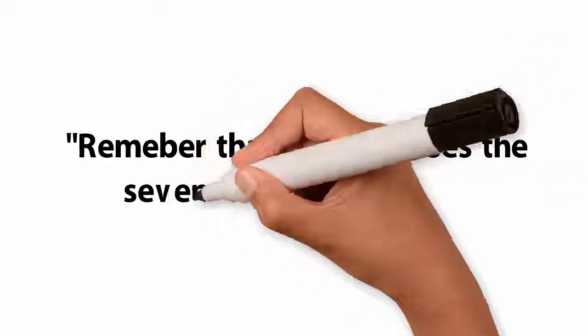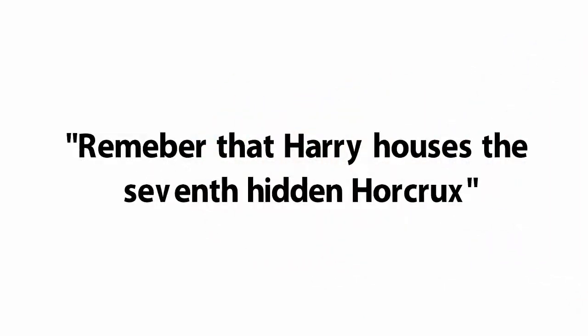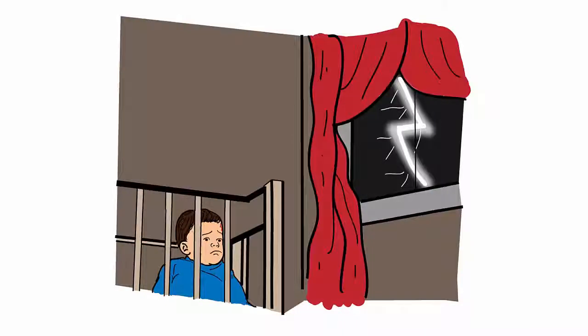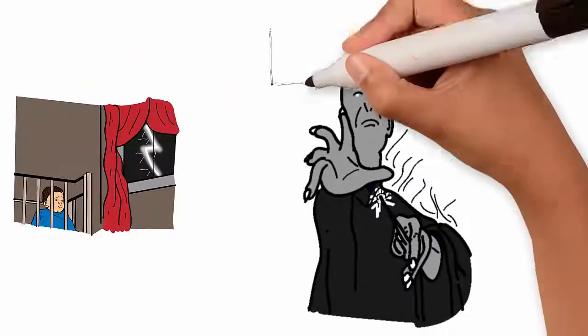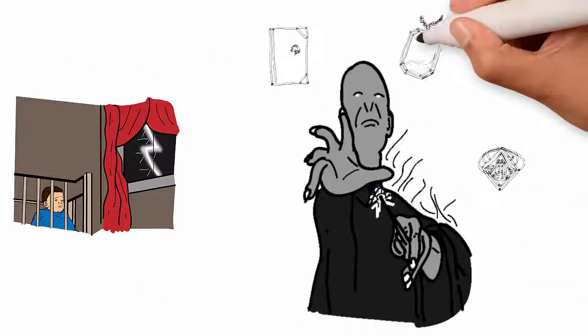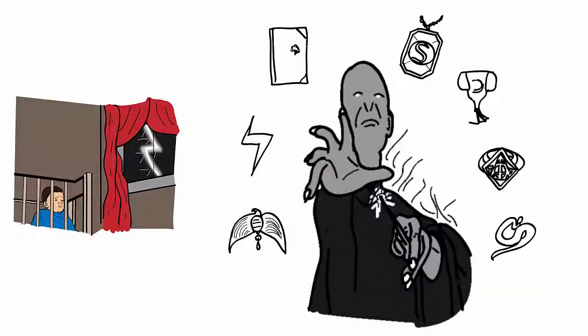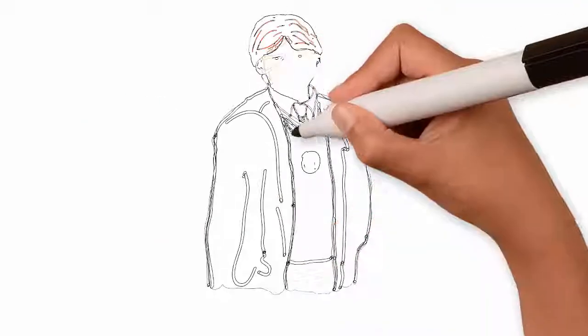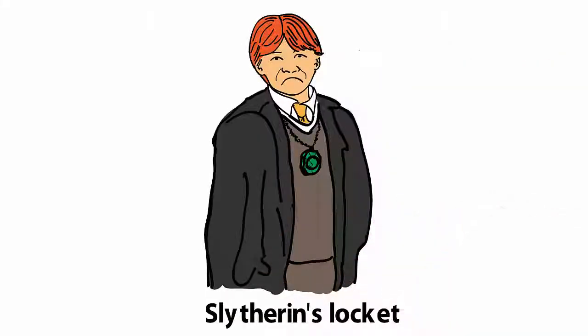Remember that Harry houses the seventh hidden Horcrux that attached itself to him on the night of his parents' murder. And Voldemort's Horcruxes, being part of Voldemort's soul, are horrendous things that have chilling effects on people around them. Do you remember how Ron reacted to Slytherin's locket?